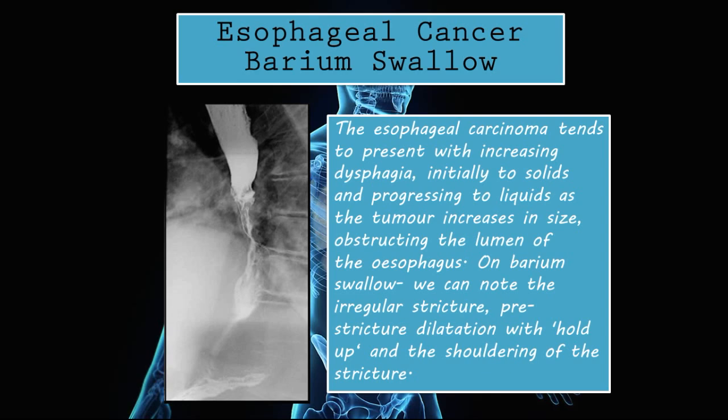Esophageal cancer on barium swallow: esophageal carcinomas tend to present with increasing dysphagia, initially to solids and progressing to liquids as the tumor increases in size, obstructing the lumen. The evolution of disease is dysphagia first to solids and then to liquids. On barium swallow we note the irregular stricture and pre-stricture dilation, with hold-up and shouldering of the stricture.